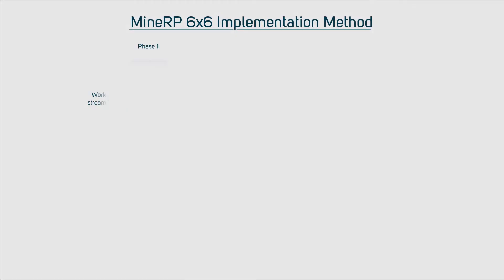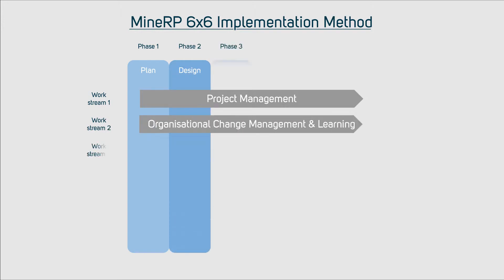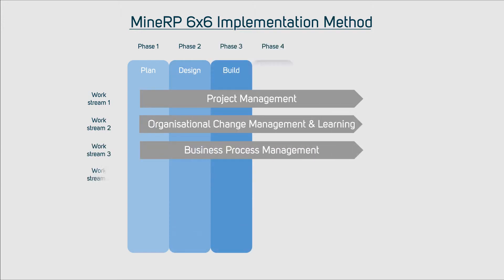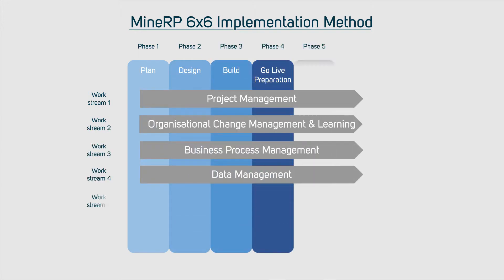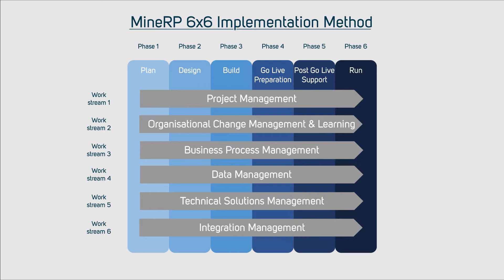Our implementation method is called the MinRP 6x6 implementation method, as it covers six phases of the project and has six work streams performed throughout those six phases.